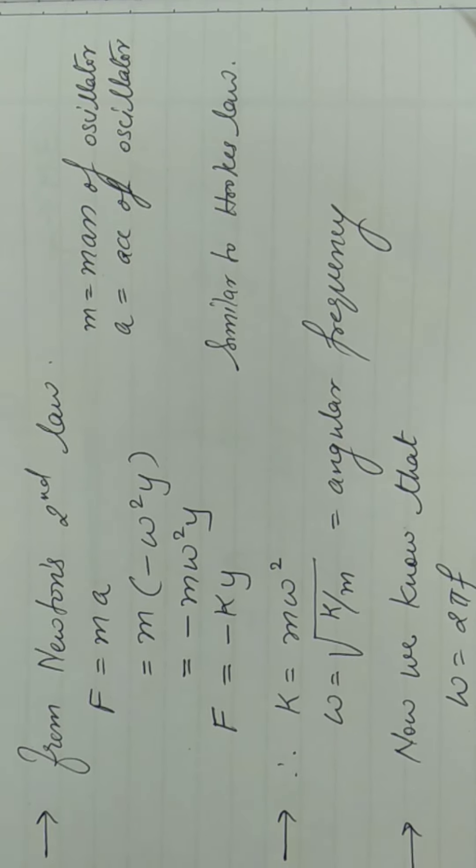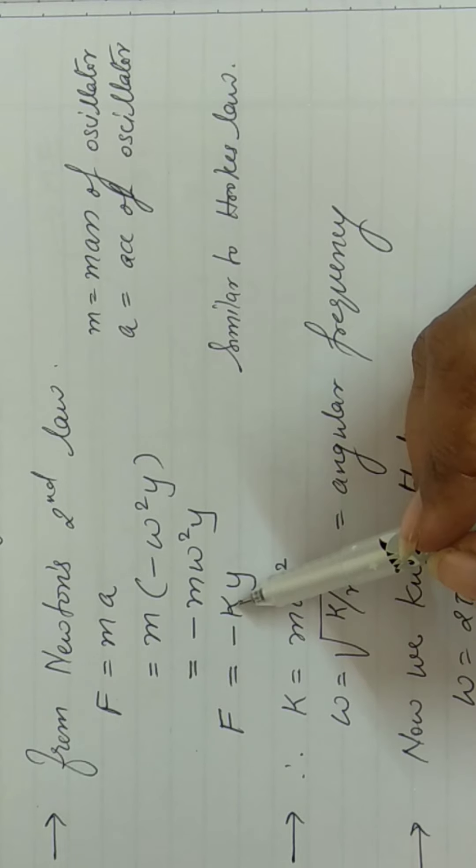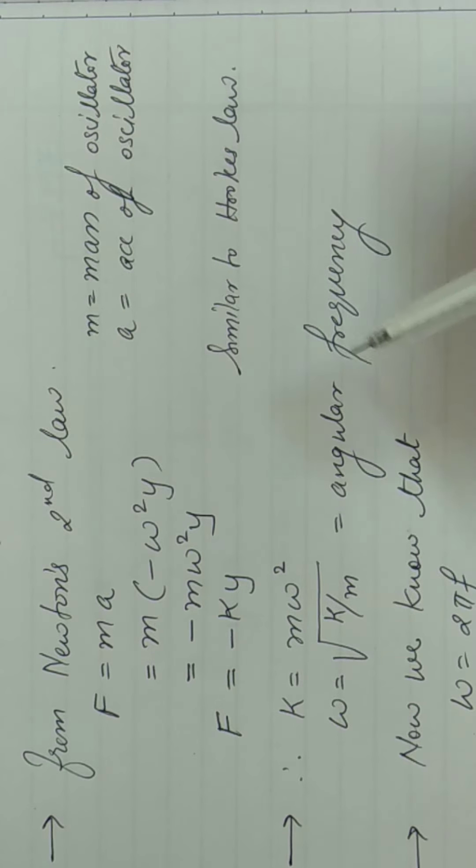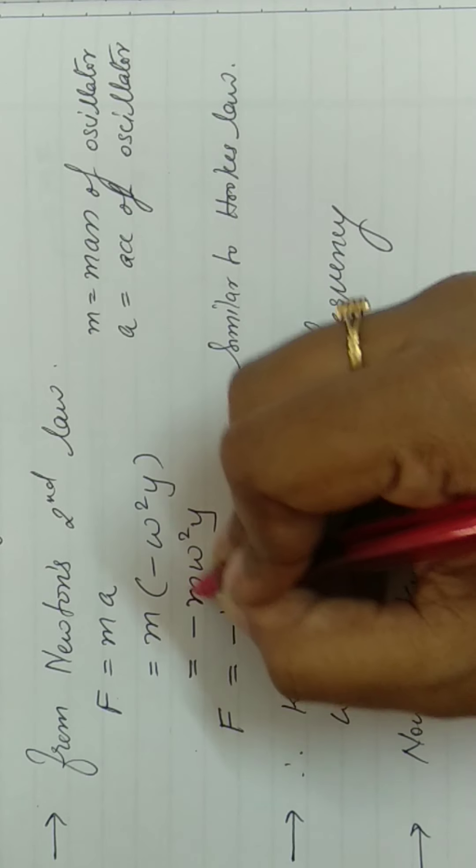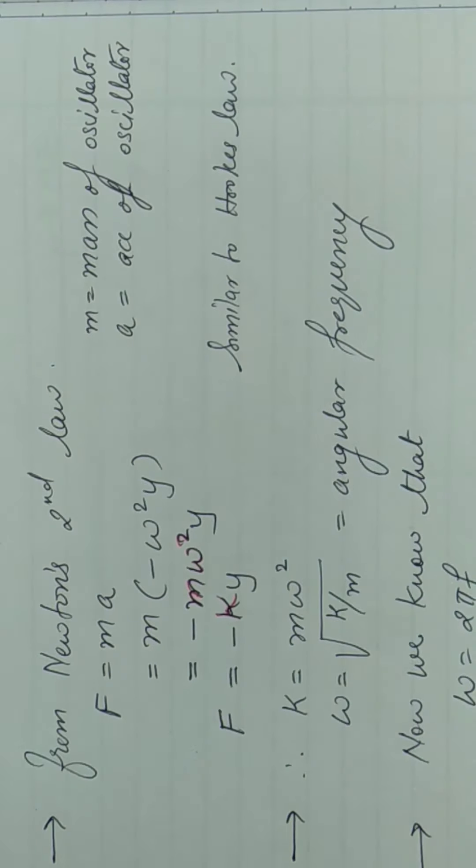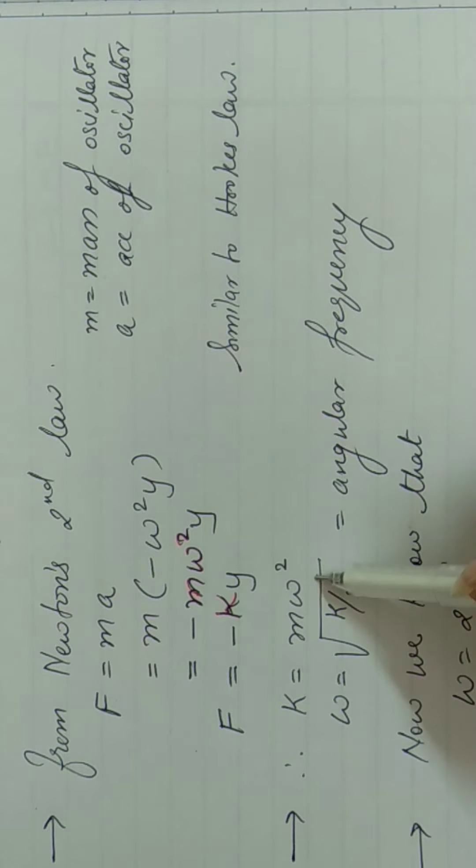So now from this, what we can say, we've done k here. K is substituted instead of this M omega square. We substituted here k. So k ki kya value ho jati hai? M omega square.